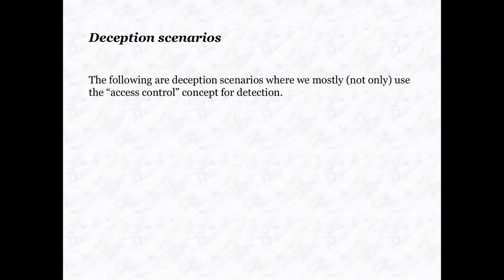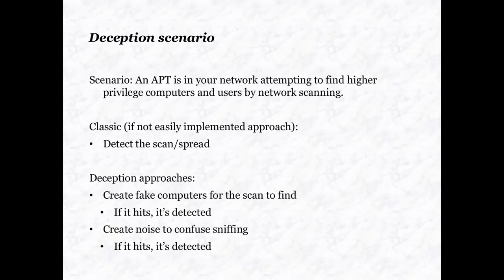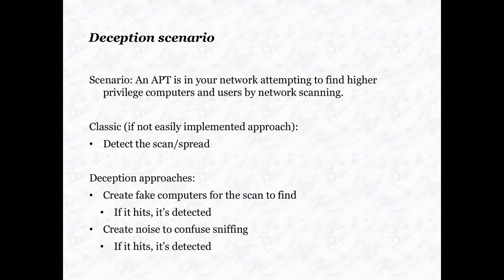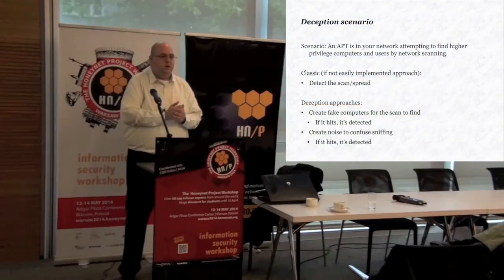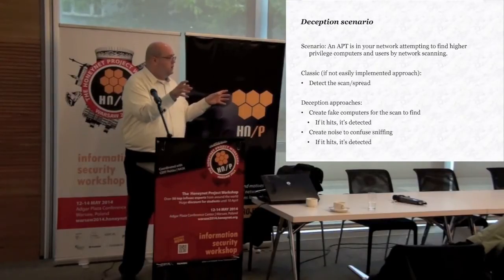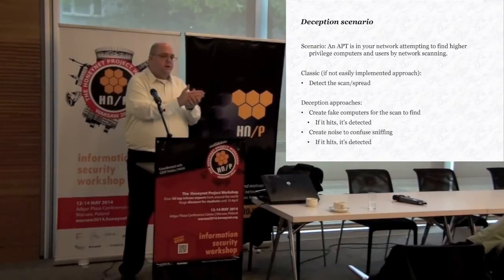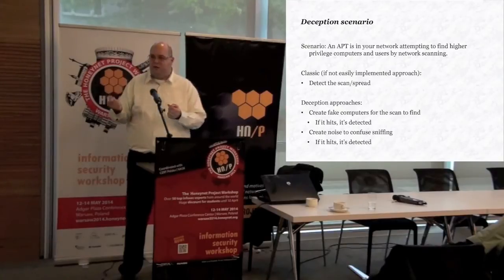Some scenarios - running through them quickly. An APT is in your network attempting to find higher privileges, escalate privileges, lateral movement. They're doing network scanning. You can try and detect the scan or the spread if it's malware. What I would do in deception is create fake computers for the scan to find - fake IPs would pop up, perhaps with services running, and if somebody hits them, if somebody connects to them, boom - we caught the attacker.